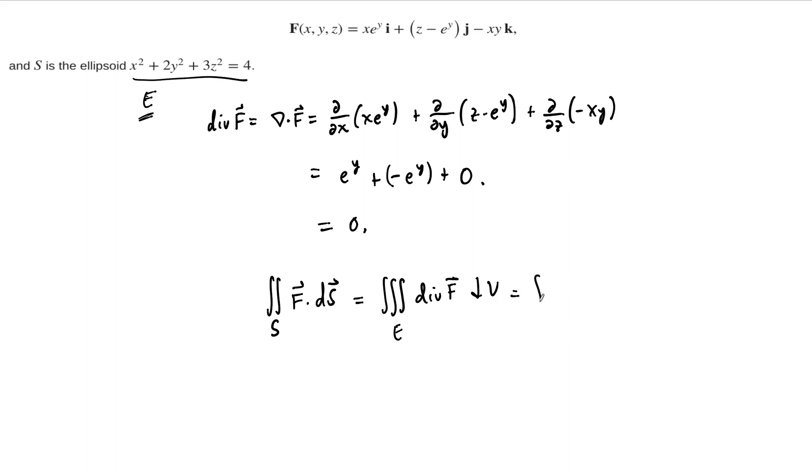And since the divergence of F is zero, this is the triple integral of zero dV. And notice there we really don't care what E is, because this integral will just be zero. And so the flux of this vector field across the surface, given by this ellipsoid, is just zero.